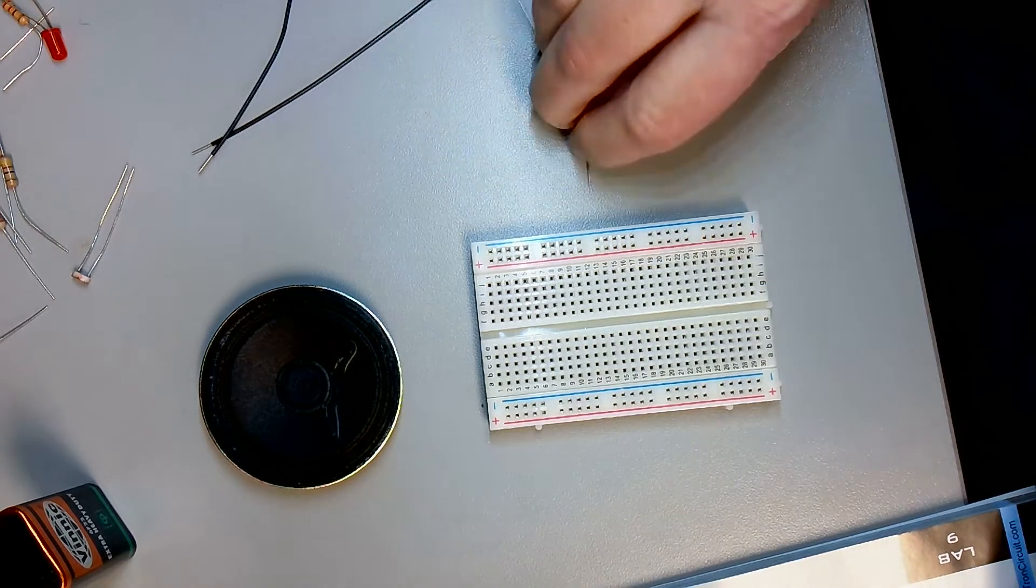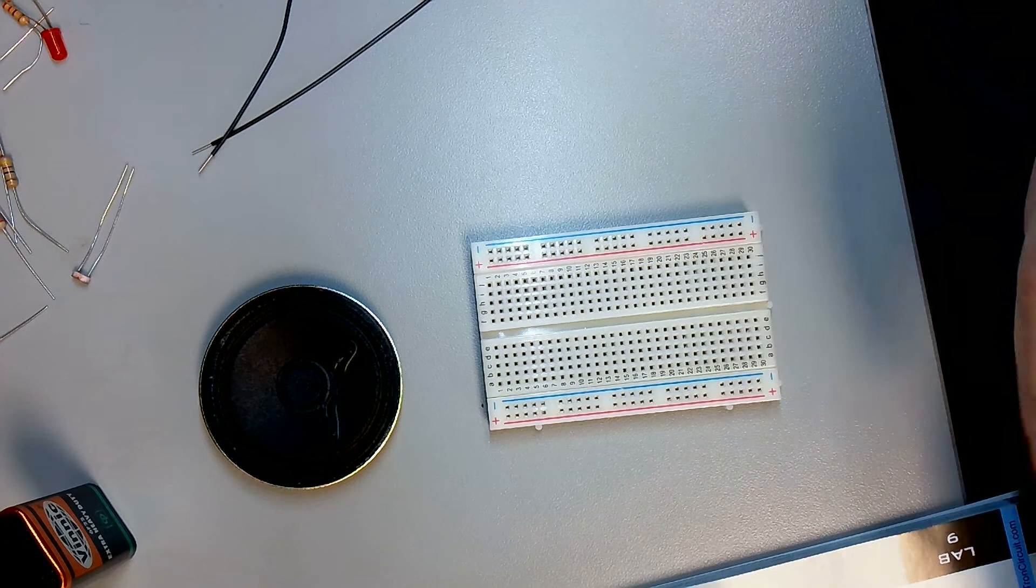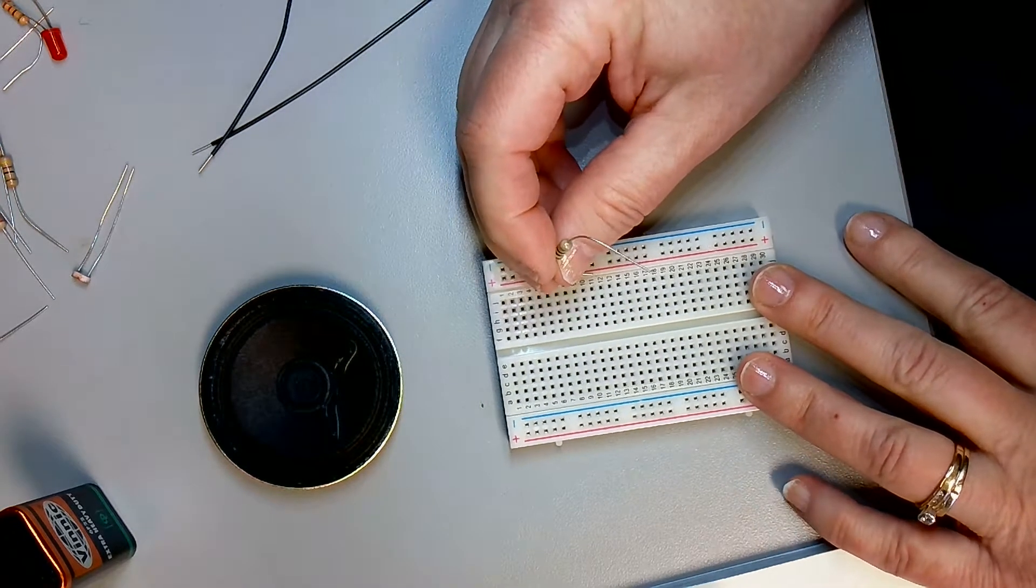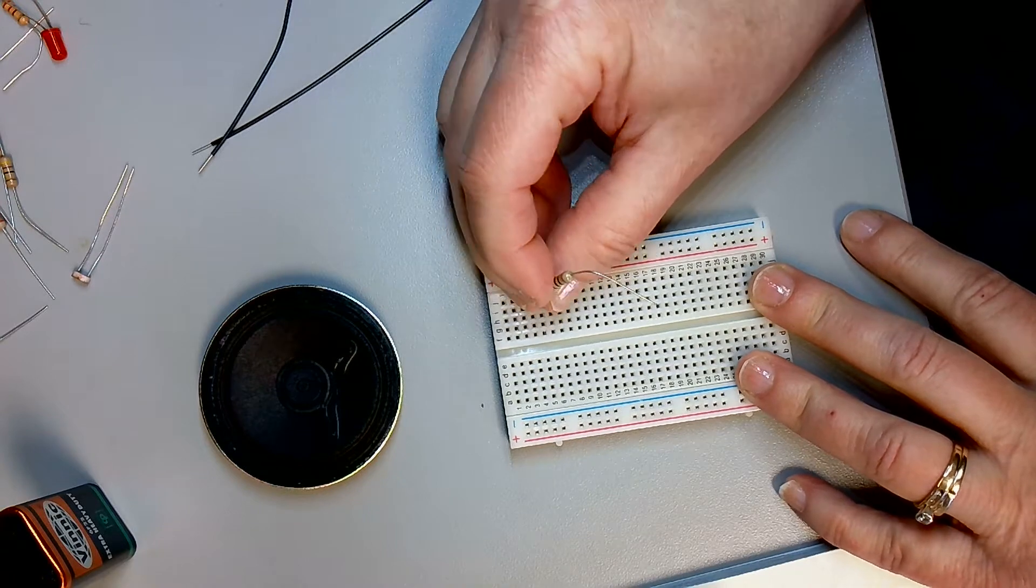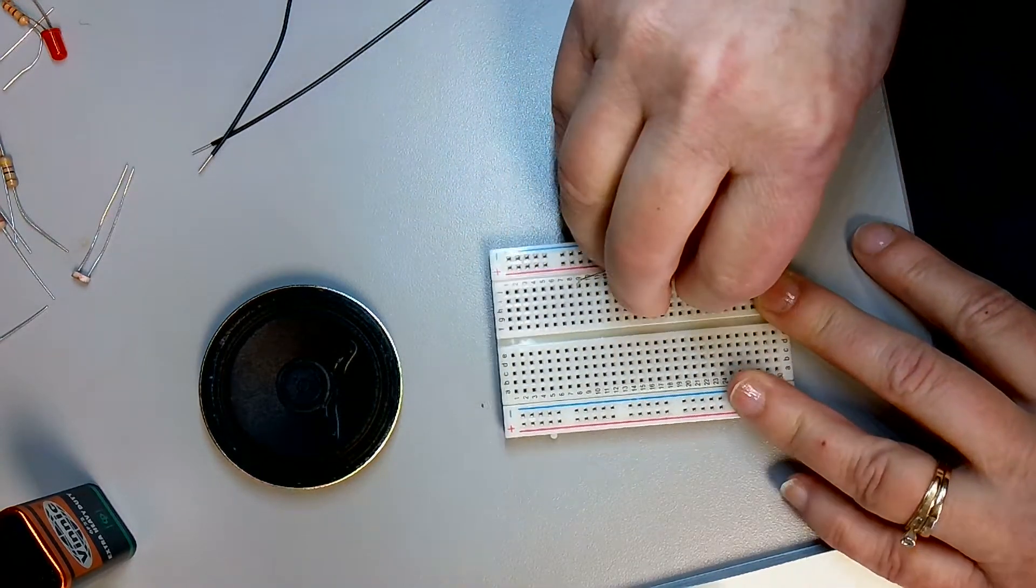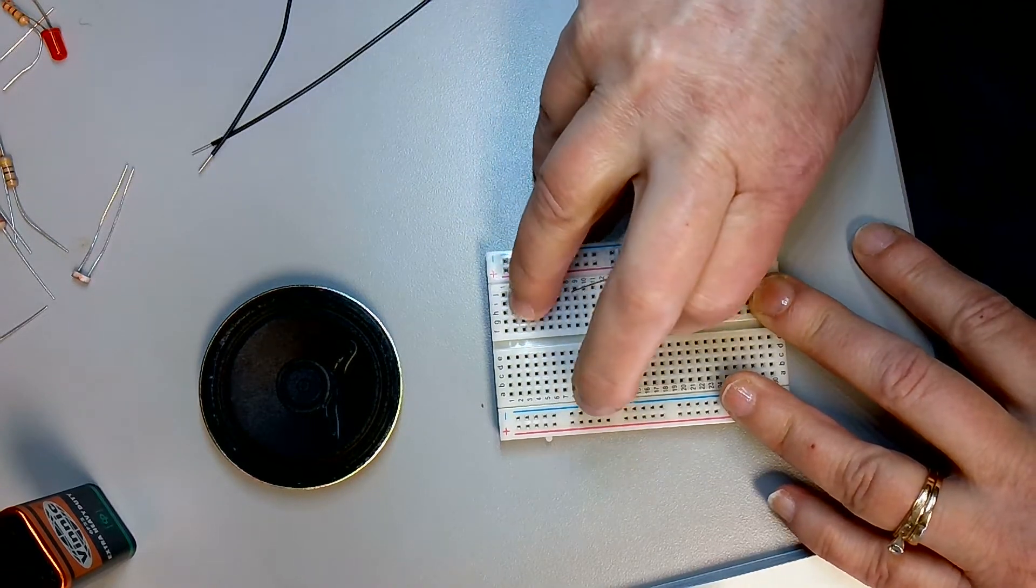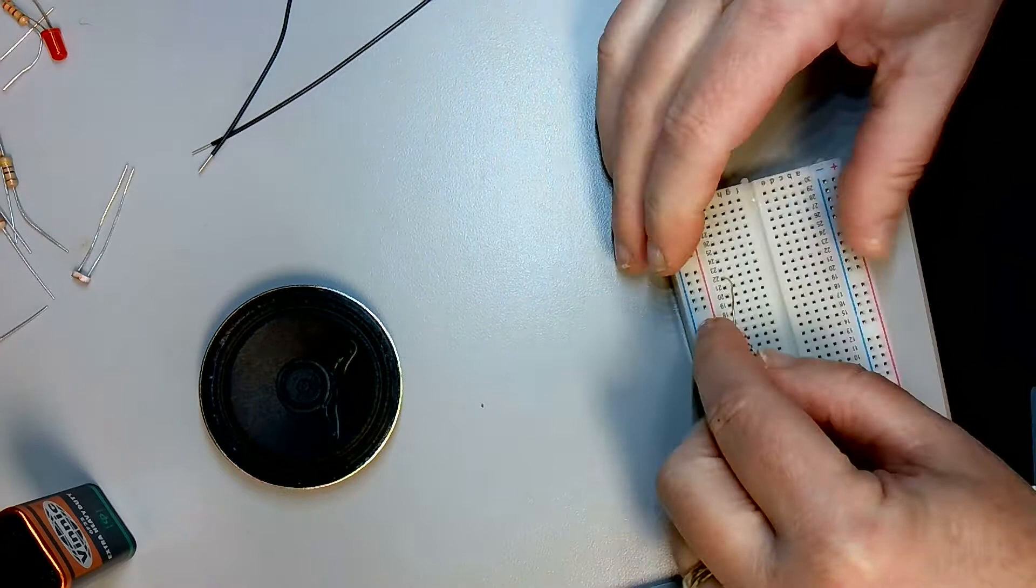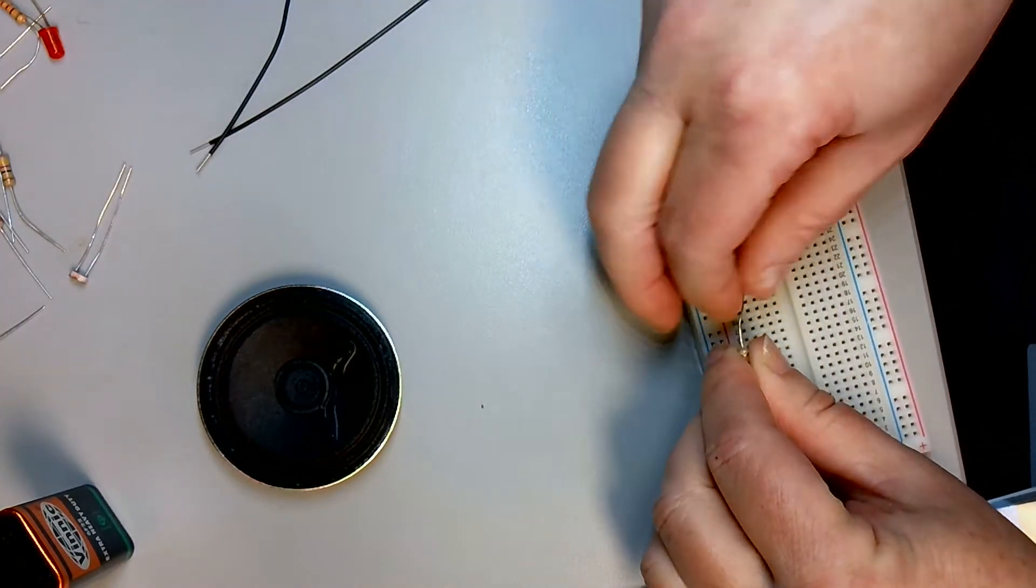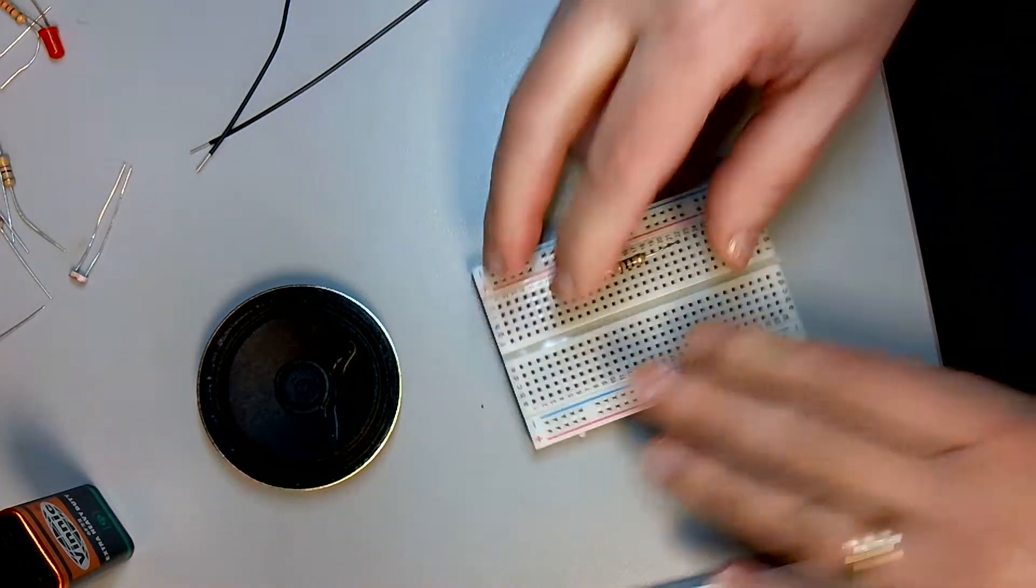Alright, so I'm going to start with the resistor and put it in pins 9J. Pin 9J like so, and pin 22J. Alright, so there's my resistor.